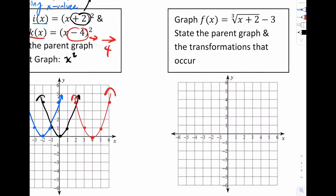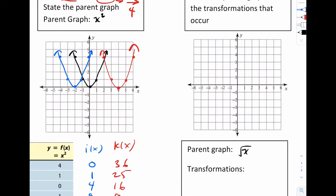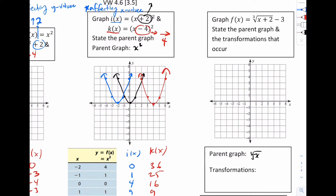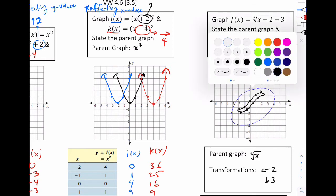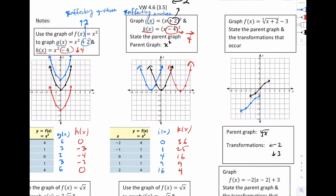So for this example, the parent graph is going to be this cube root x. So we can write cube root x. Now the transformations that happen, we'll look inside here. This plus 2, we learn that's going to move it left 2. And this minus 3 should move it down 3. So I'm going to sketch the parent. So recall the cube root graph looks something like this. Now let's just grab it. And let's follow the directions. Left 2, 1, 2, down 3. 1, 2, 3. And there's our final graph.